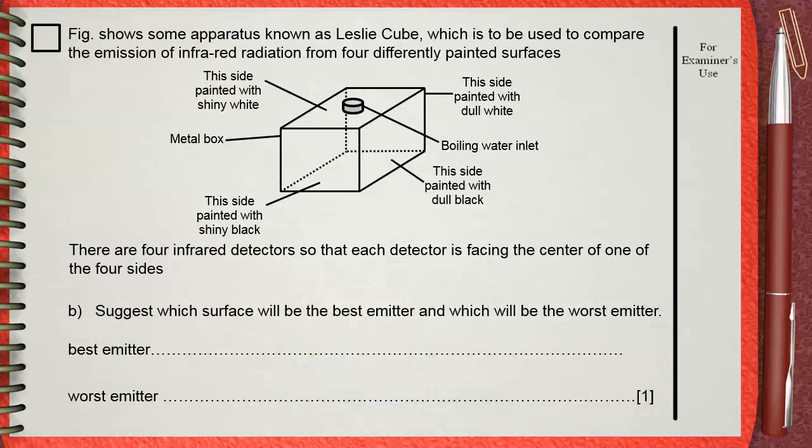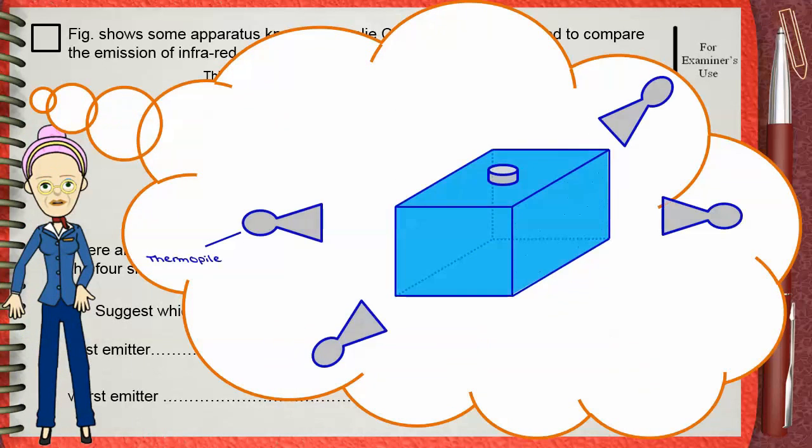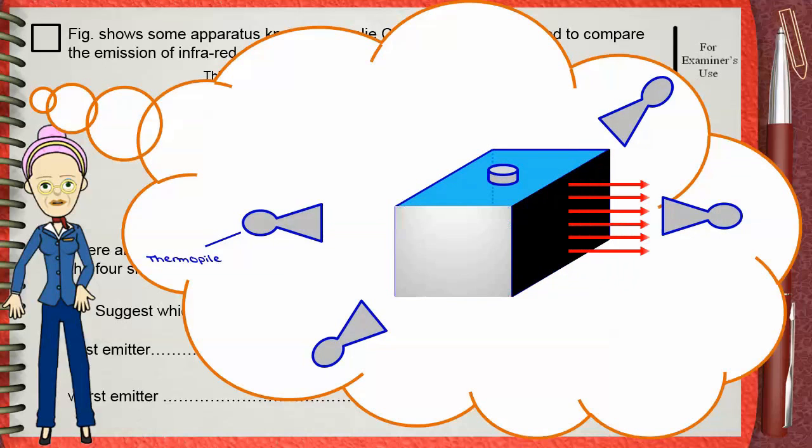This side is dull black and this side is silvery. Dull black is good absorber and good emitter. That's why it will take heat radiation from the boiling water and allow it to pass outside the block. While the silvery painted surface is a good reflector, that's why it will reflect the heat back into the boiling water, only a very few amount of heat radiation can be emitted.